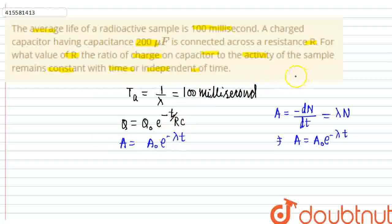It has said that the ratio of charge on capacitor to the activity of the sample means Q over A. This is Q_0 by A_0. This has to be time independent.